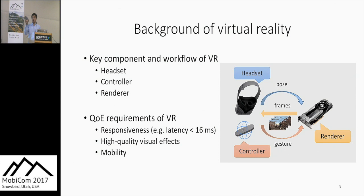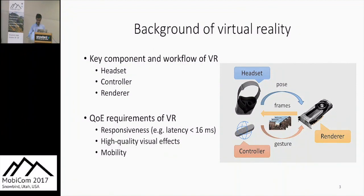A typical VR system consists of three key components: a VR handset, a controller, and a renderer. The handset checks the user's pose, the controller captures the user's gesture so the user can interact with the app, and the renderer renders high-quality frames for display. To support acceptable user experience, modern VR systems must meet three critical performance requirements: good responsiveness with low interactive latency, high quality visual effects to support immersive experience, and the handset components should be untethered to support the ultimate VR experience.